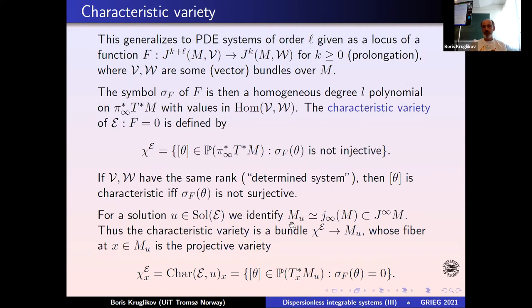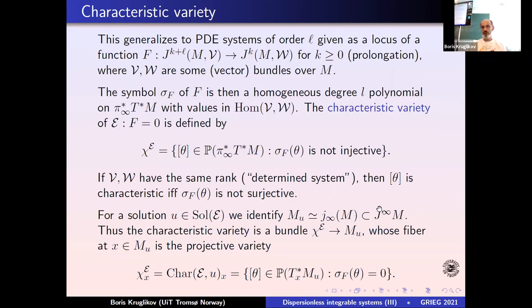If you have a solution, it's convenient to think of it as the graph of a map from M to ℝ. You can identify the base M with the submanifold J-infinity of u(M), which is of course projected to M but it's useful to think of the solution as base together with this function. The characteristic variety is then a bundle over the solution, whose fiber at point x consists of all θ such that — in the scalar case — the symbol equation holds. So the scalar case translates to: this polynomial equals zero.